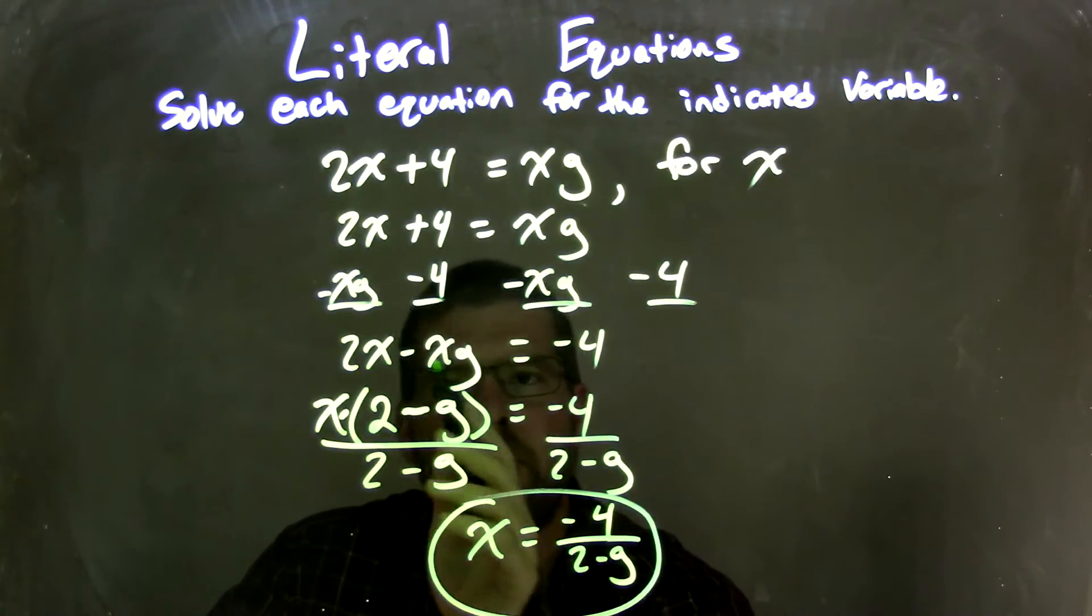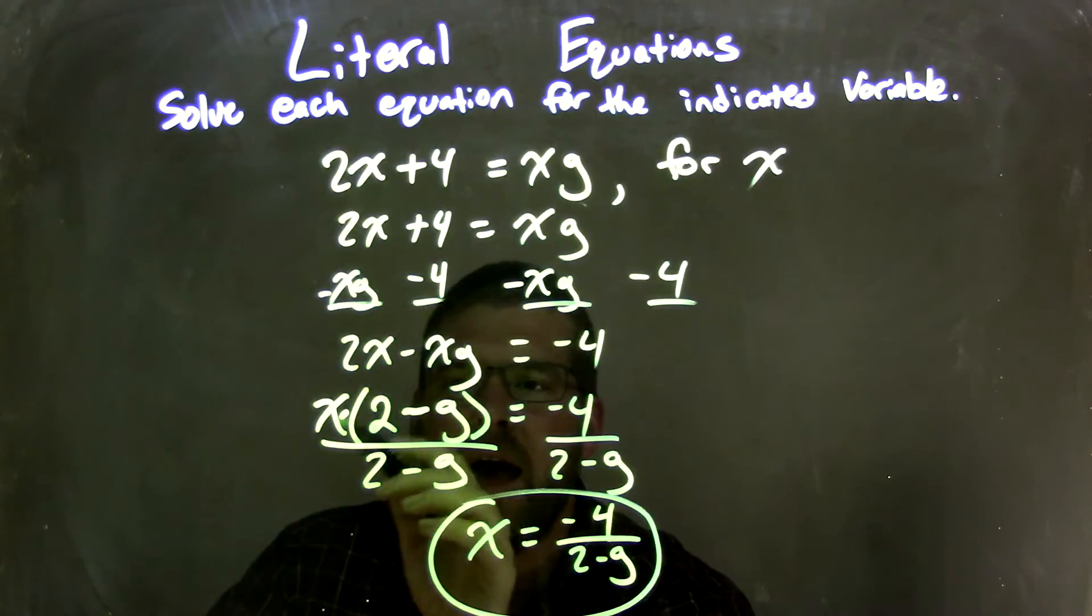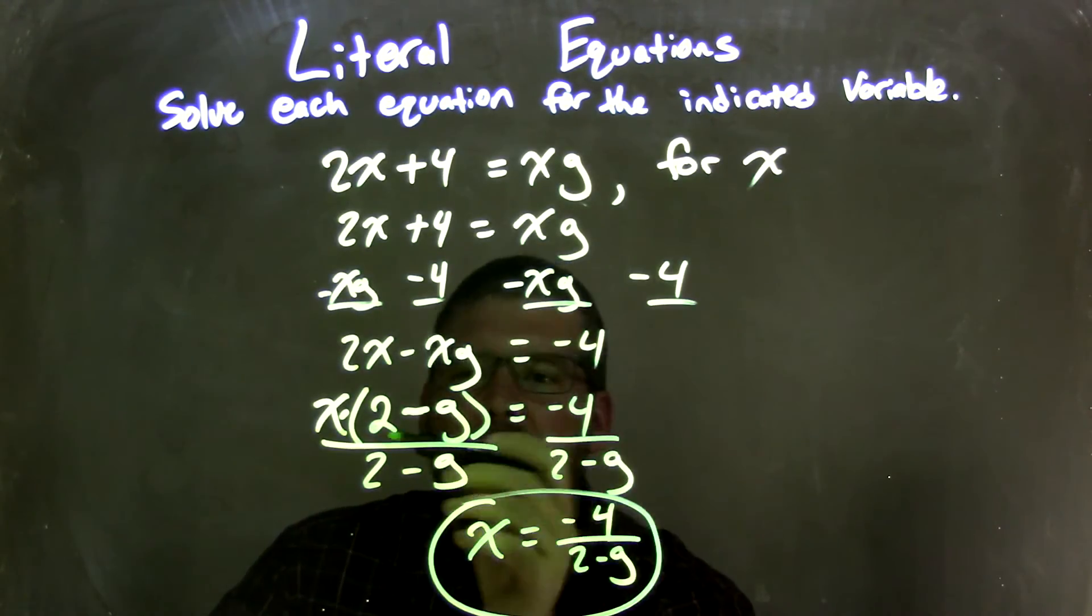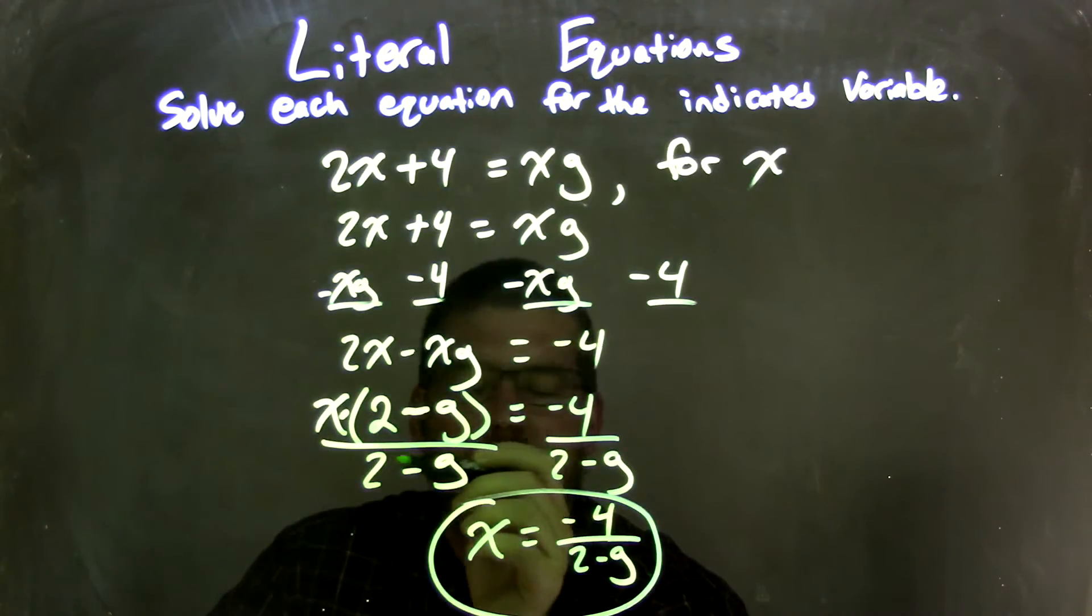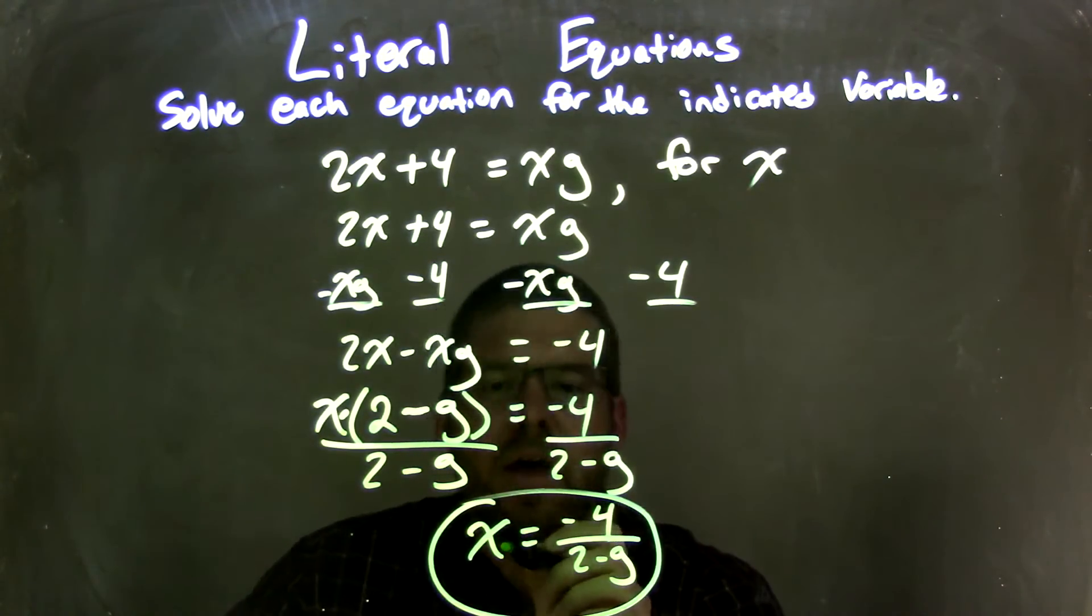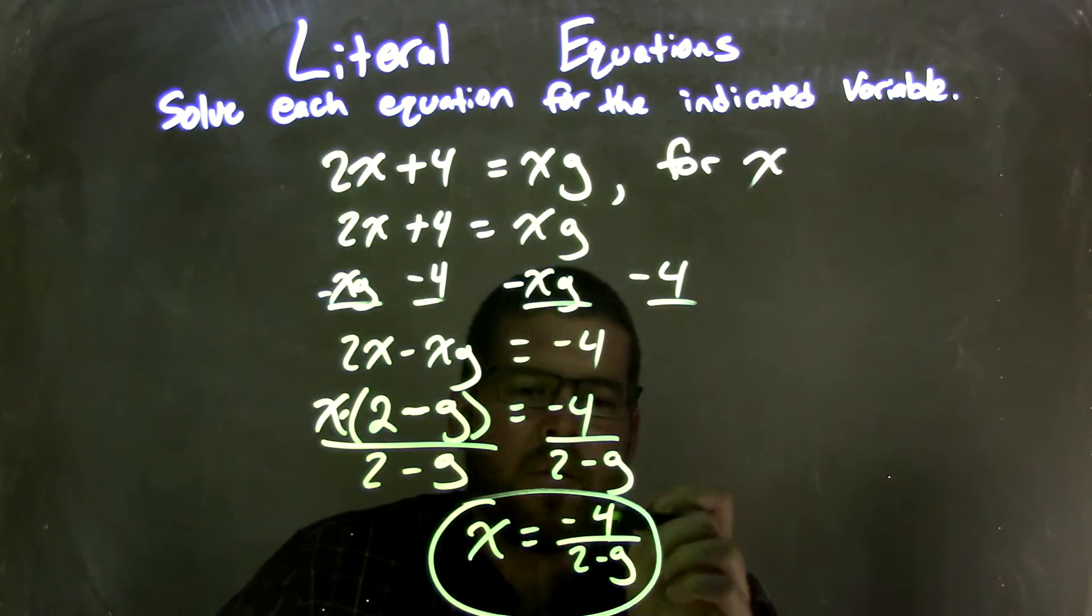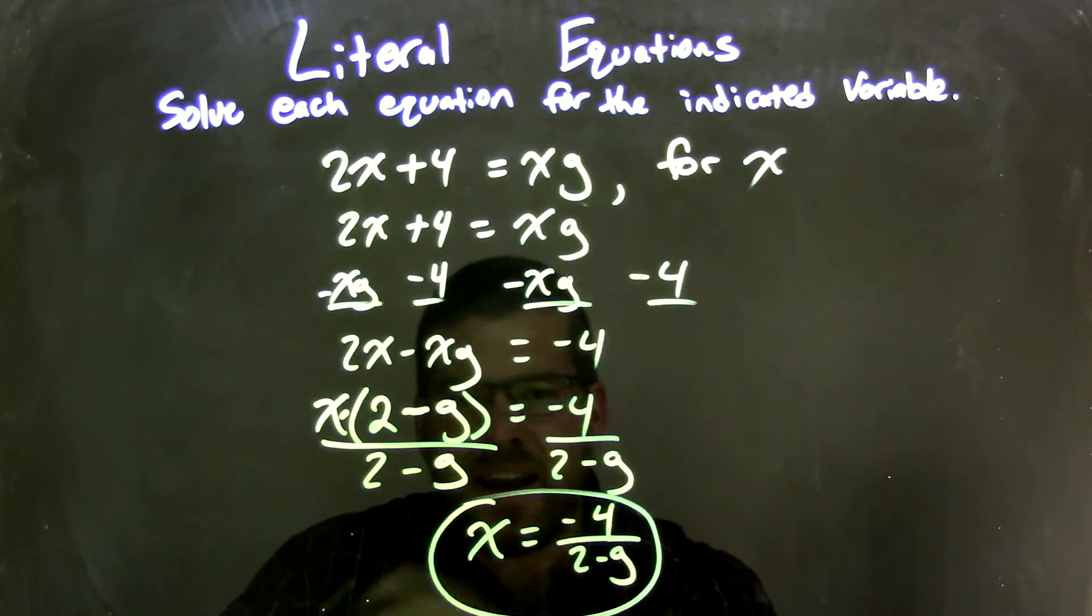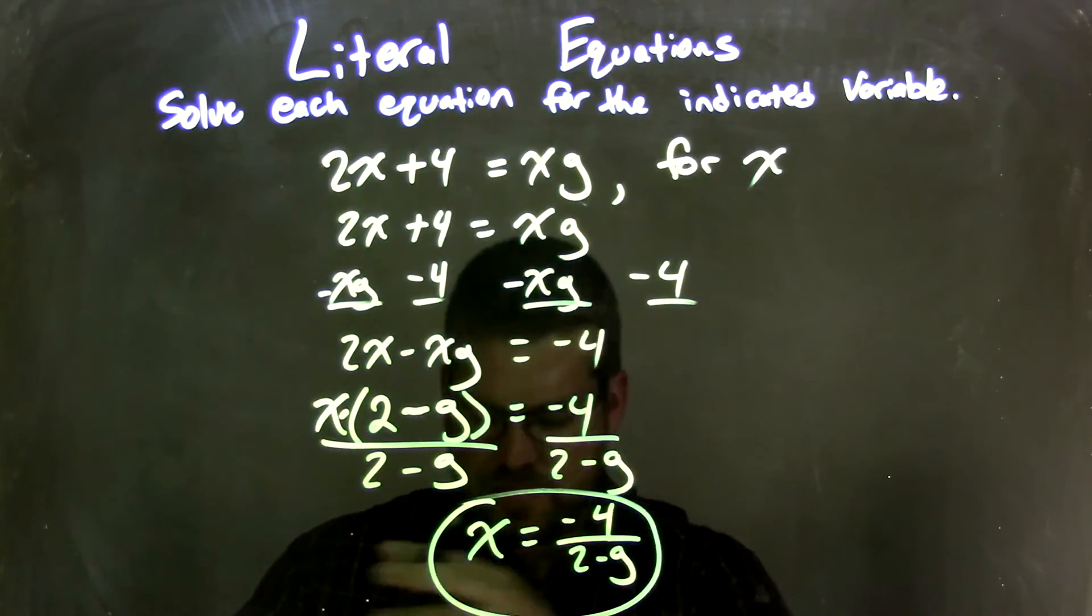Then I pulled out an x from both parts, leaving me with x times parentheses 2 minus g equals negative 4. I then divided by 2 minus g on both sides, leaving me with x by itself equal to negative 4 over 2 minus g. x is isolated, we're done, and that is our final answer.